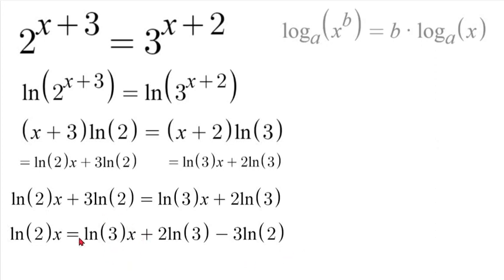So now we're going to move the x on the right side over to the left so we'll subtract that which means we'll be left with natural log of 2x minus natural log of 3x is equal to 2 natural log of 3 minus 3 natural log of 2.